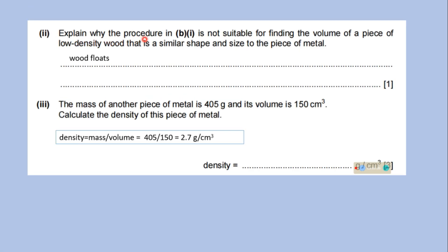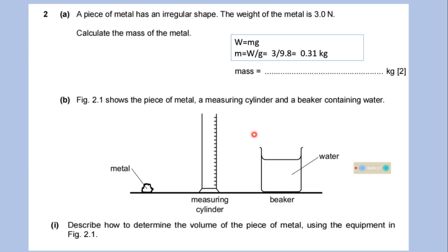Explain why the procedure in part 1 is not suitable for finding the volume of a piece of low density wood that is similar shape and size to the piece of metal. Because low density wood will float on the water. The displaced water in that case if the object floats will not be equal to the total volume of the object. So since the wood floats we cannot find its volume using the displacement method of the water.